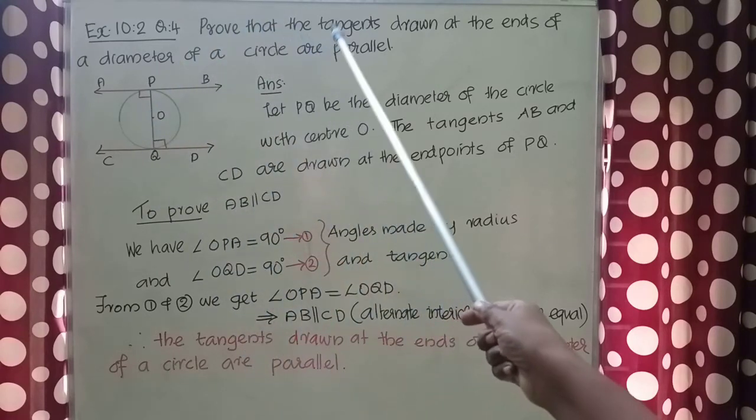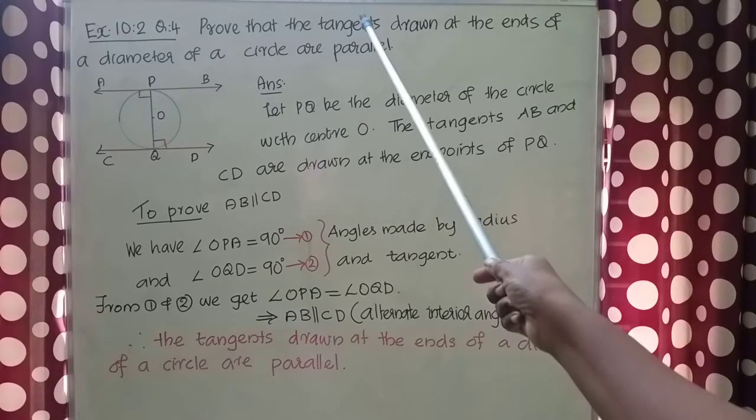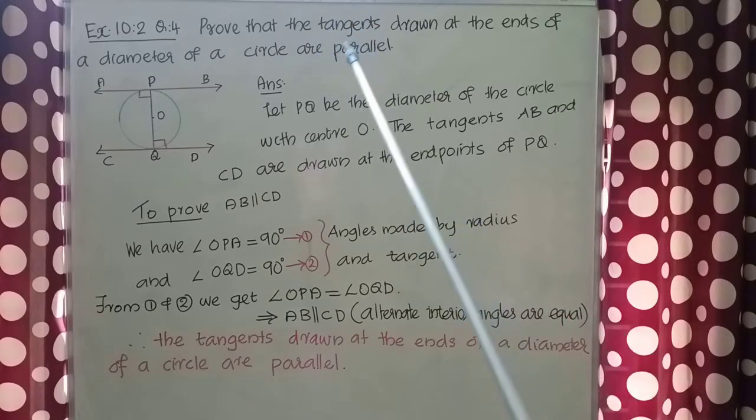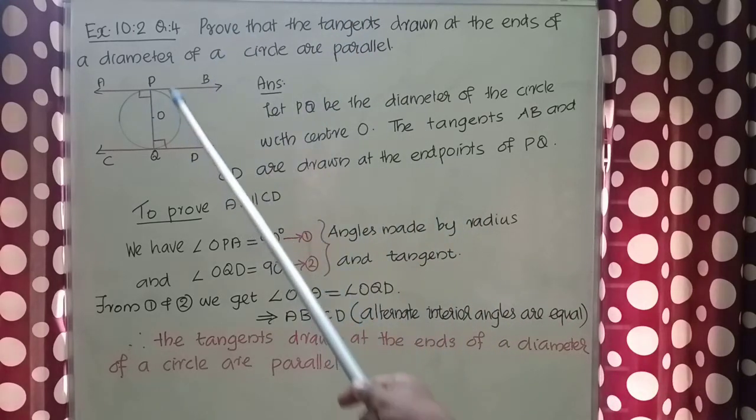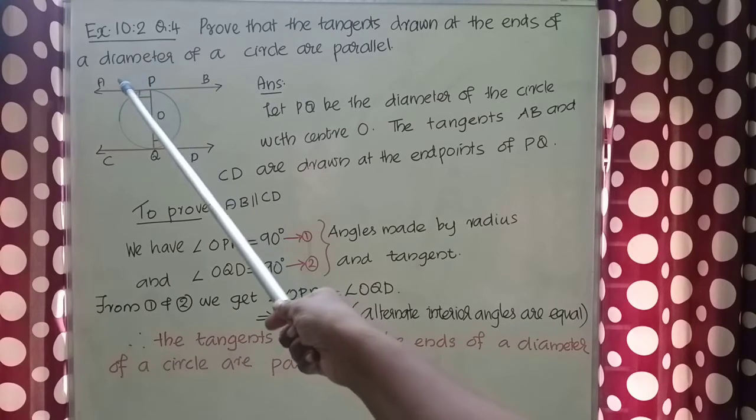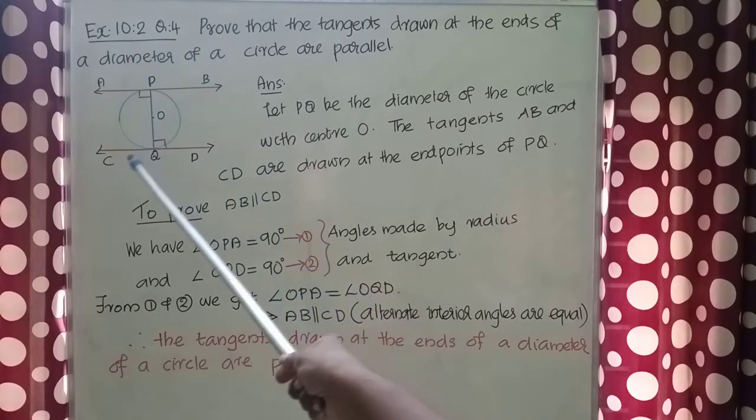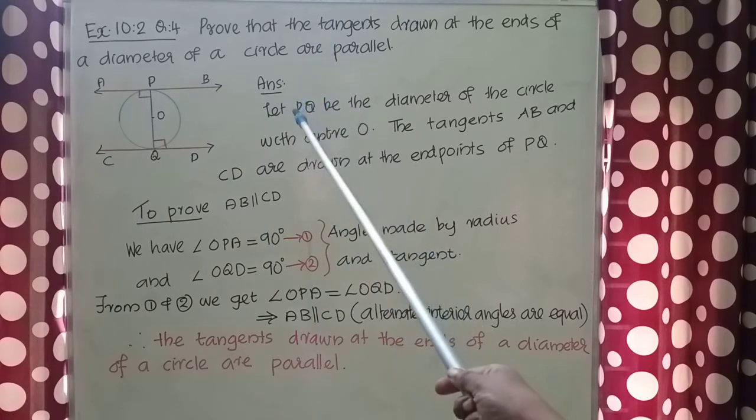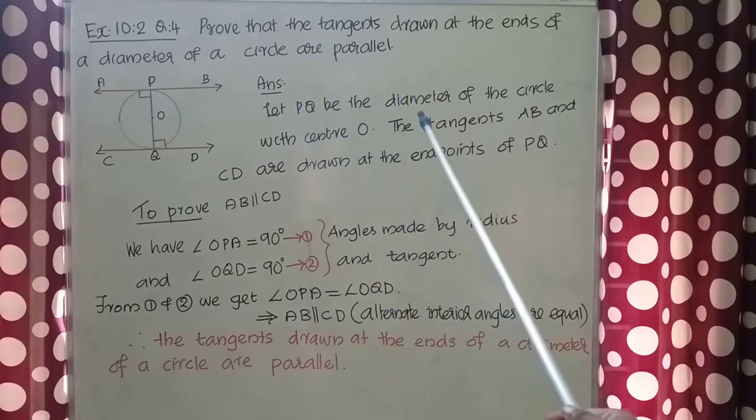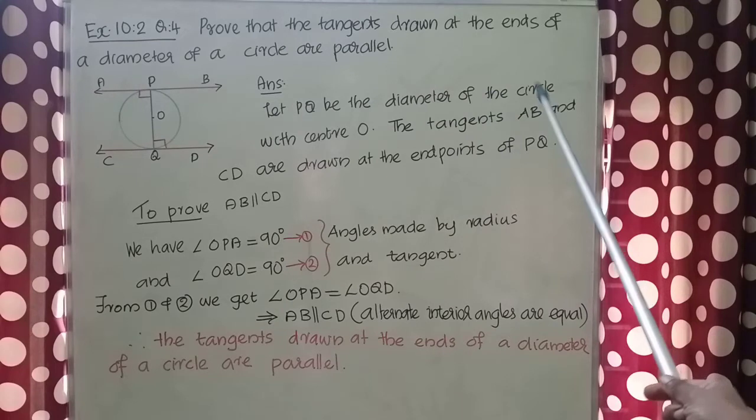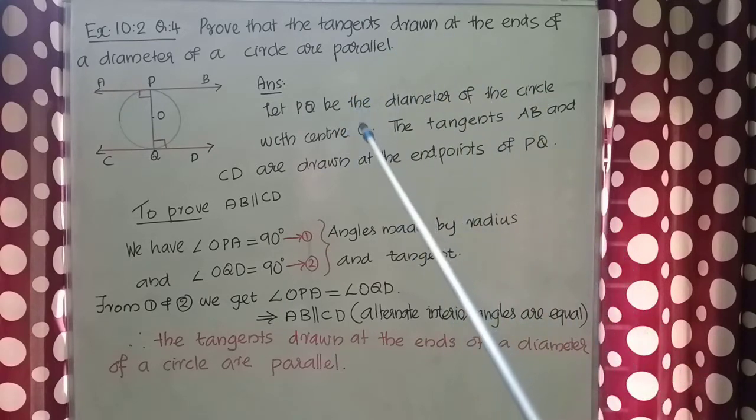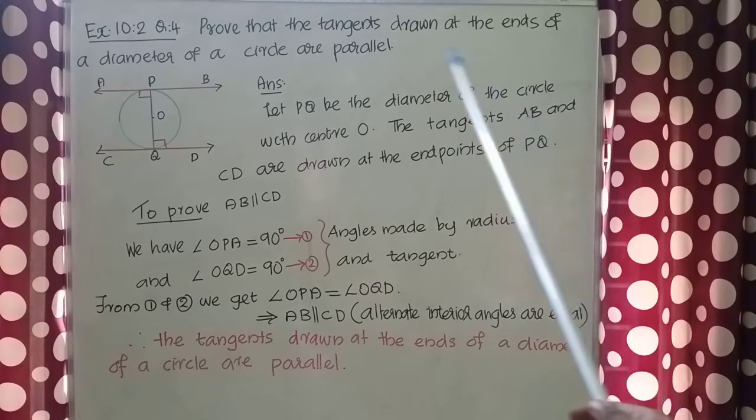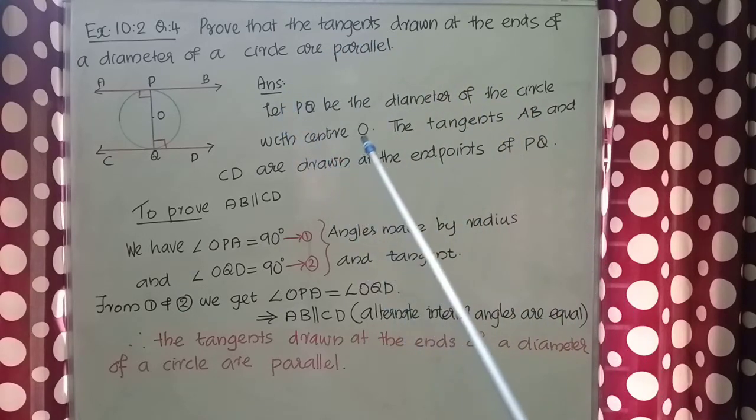We need to prove that the tangents are parallel. That means we need to prove AB is parallel to CD. Let PQ be the diameter of this circle with center O. The tangents AB and CD are drawn at the endpoints of PQ to prove AB parallel to CD.